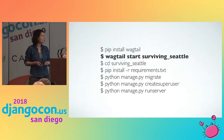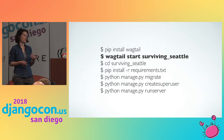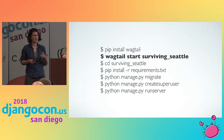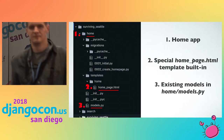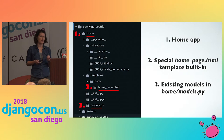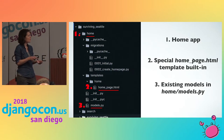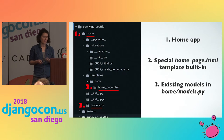So back to these commands we just ran — wagtail start surviving Seattle. It's a lot like starting up a Django project, and it does start a Django project for you, but it does a lot of other really cool things as well. You get for free this really cool home app. In that home app, you'll see a special home_page HTML template, and you'll also see your existing models with a migration already there, hinting at what's coming next.